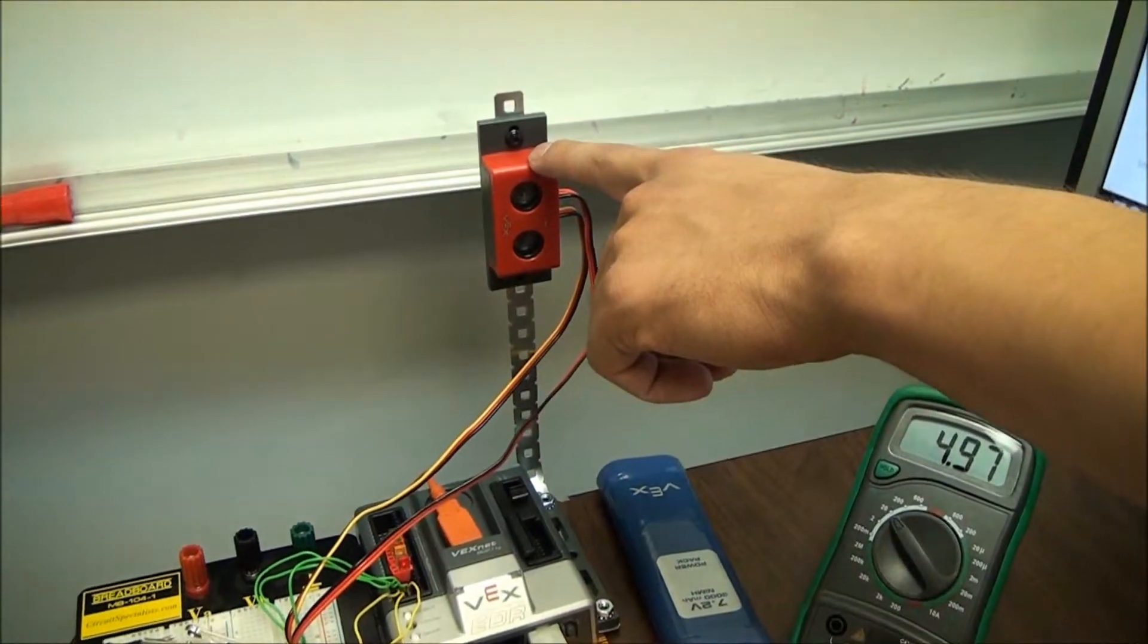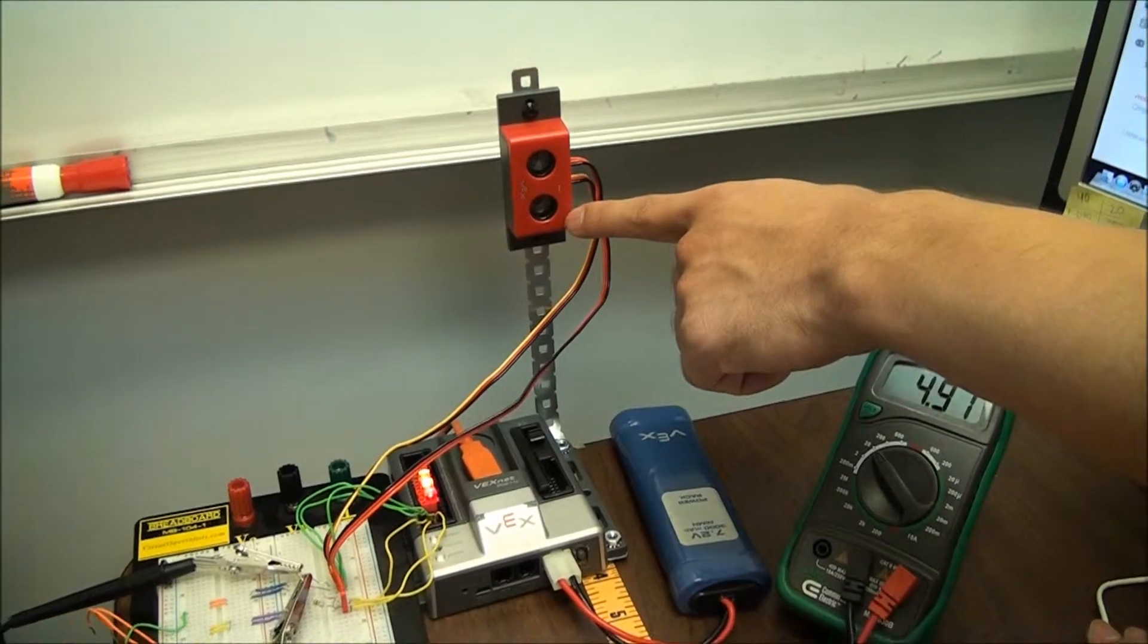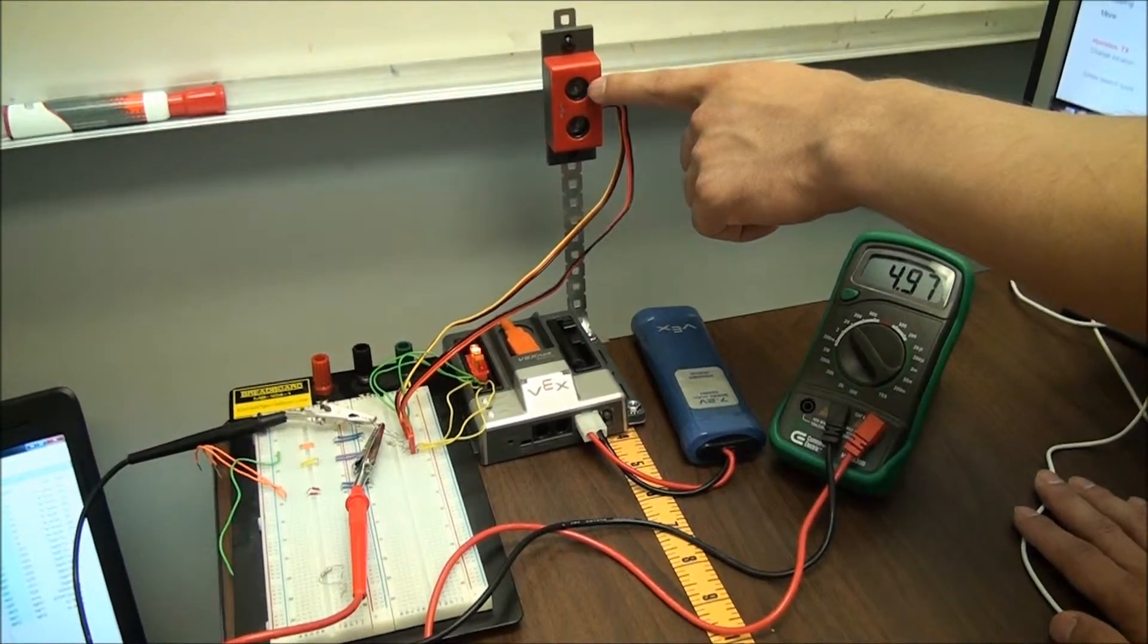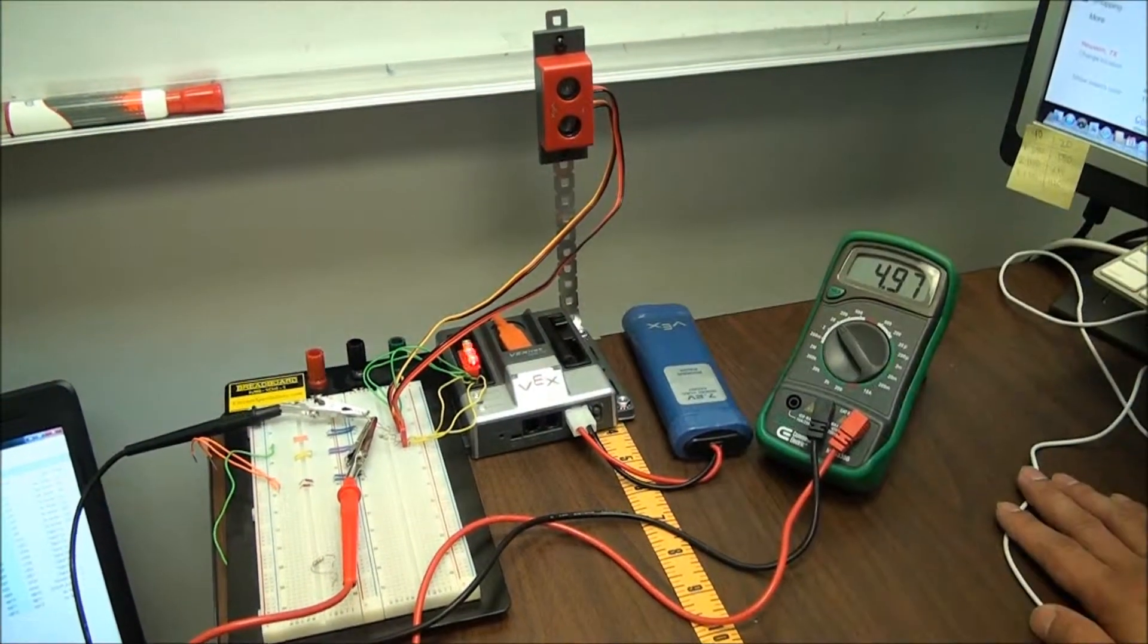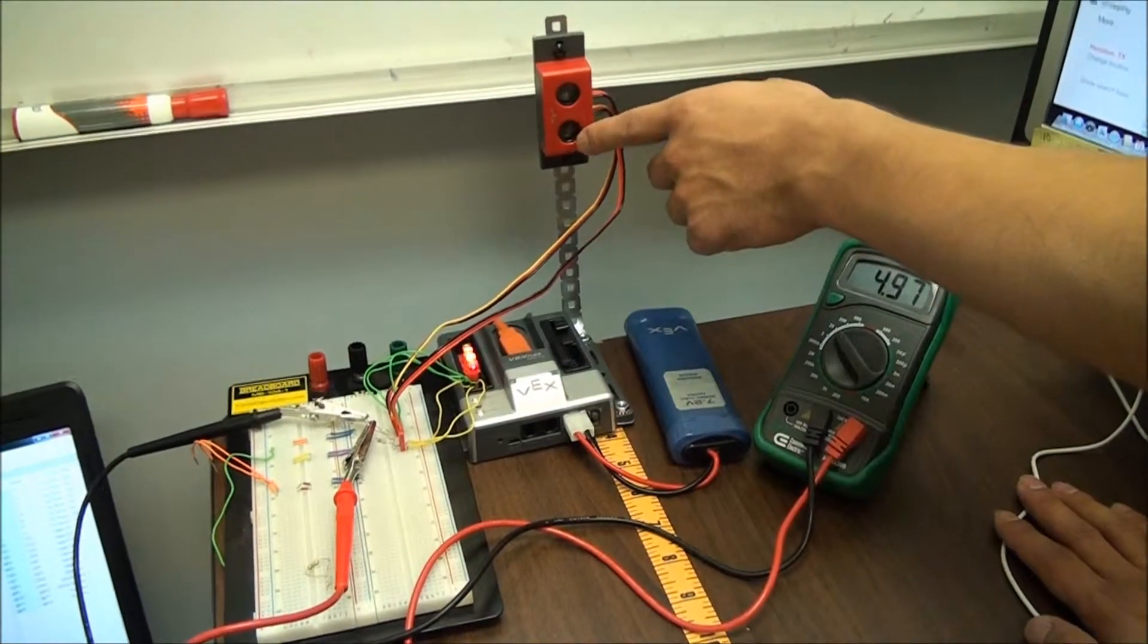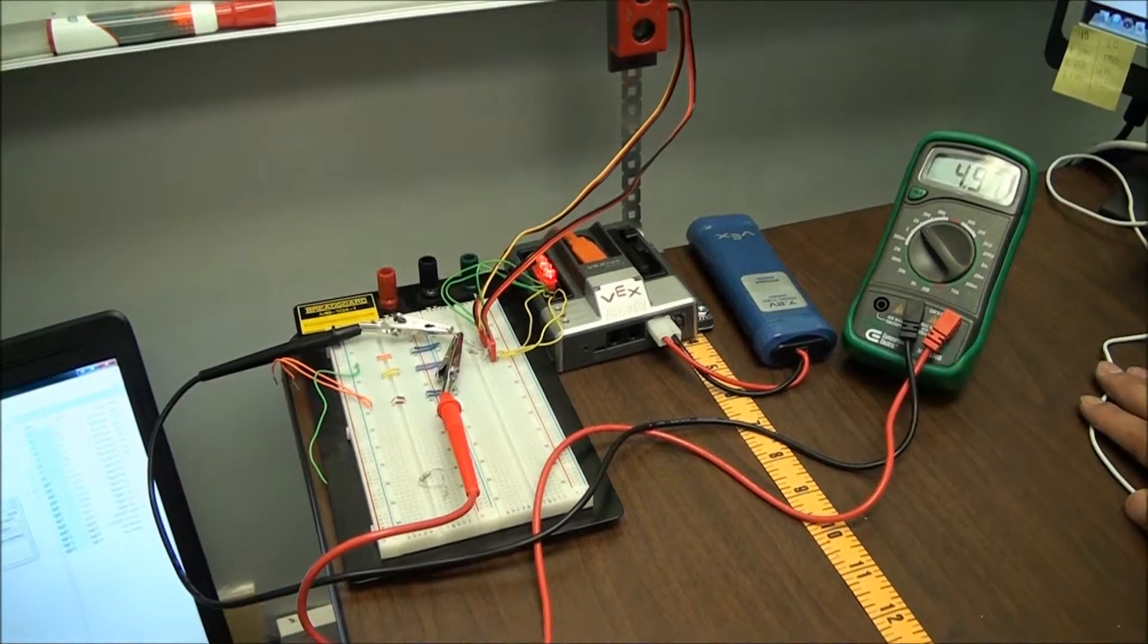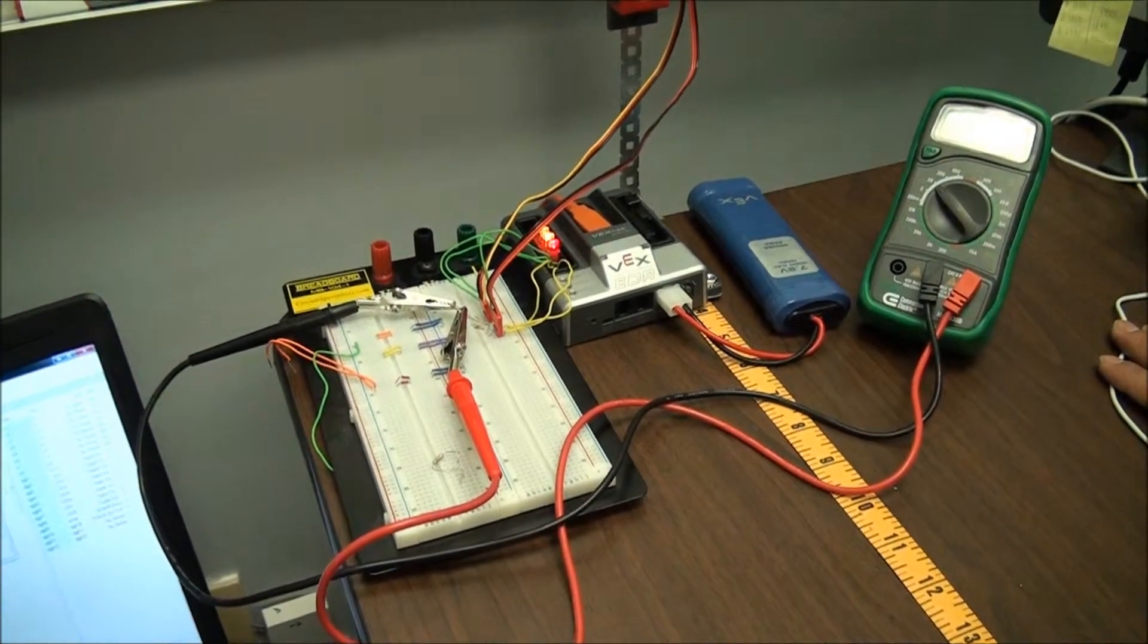The top speaker is the output, and the bottom speaker is the input. The output sends a frequency wave out, and then the input receives that same frequency wave once it's bounced back to determine how far an object is from the ultrasonic sensor.